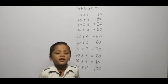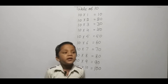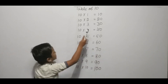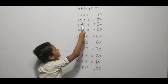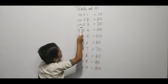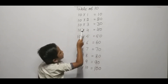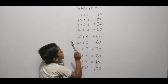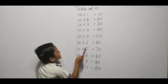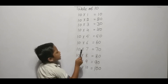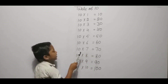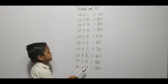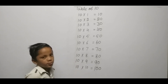Hello friends, we are learning table of ten. Ten one ja ten, ten two ja twenty, ten three ja thirty, ten four ja forty, ten five ja fifty, ten six ja sixty, ten seven ja seventy, ten eight ja eighty, ten nine ja ninety, ten ten ja one hundred. Thank you.